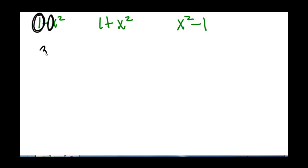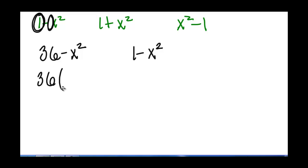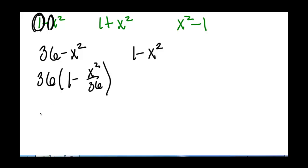Let's say that we had 36 minus x squared. In this case, we have been wanting to get something that looks like 1 minus x squared. We can do this by pulling out a 36, so we get 36 times the quantity 1 minus x squared over 36. Now we have the 1 that we want, but instead of x squared we have x squared divided by 36. So if we pull out the squared term, we get 36 times the quantity 1 minus x over 6, quantity squared.